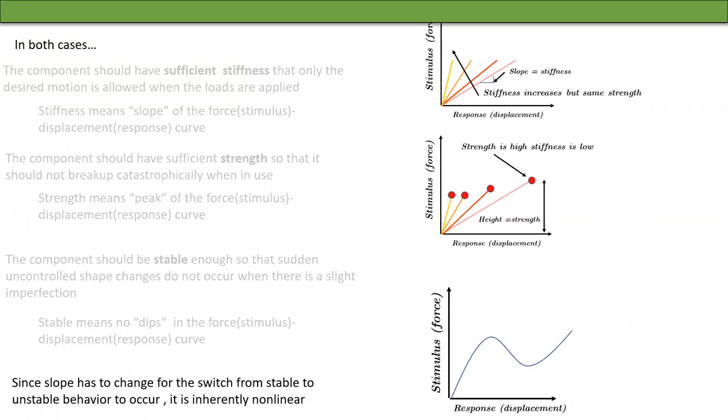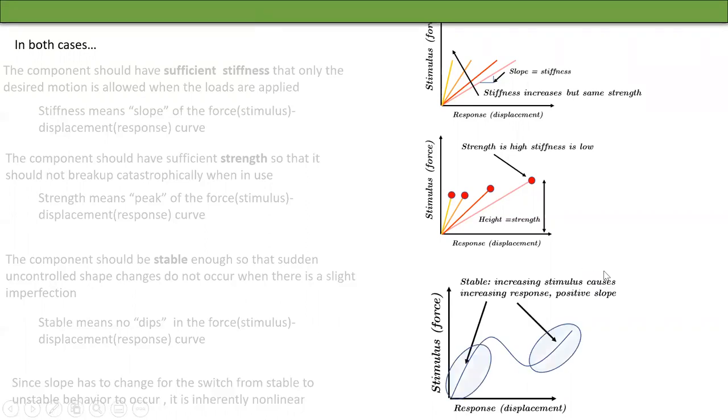What I mean by that is, if you look at this curve here, the blue regions are places where increasing force causes increasing response displacement. So these are stable regions. The red region is where increasing the force will cause decrease in the displacement. This is an unstable region.